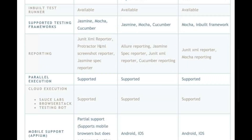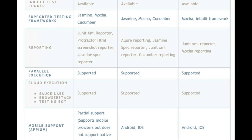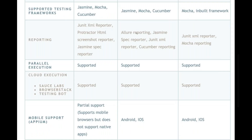Reporting-wise: Protractor has its own JUnit XML reporter, HTML screenshot reporter, and Jasmine spec reporter. WebDriver.io has Allure reporting, Jasmine spec reporter, JUnit XML reporter, and Cucumber reporting — you can simply generate those. Nightwatch has JUnit XML reporter and Mocha reporting available. WebDriver.io has the better reporting options overall.